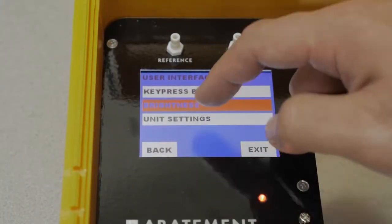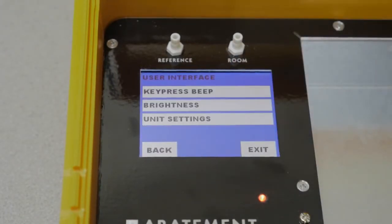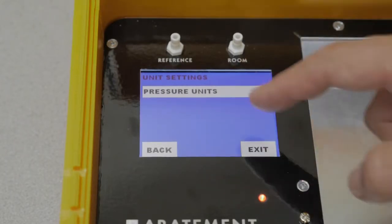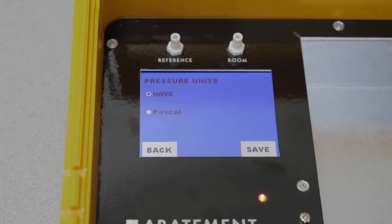You can also control the screen brightness. And through unit settings, you can control how the units are measured, either in inches of water column or pascals.